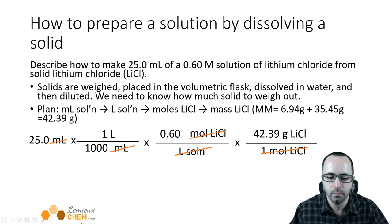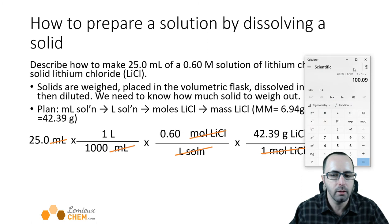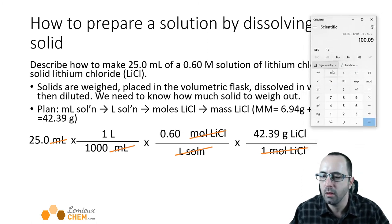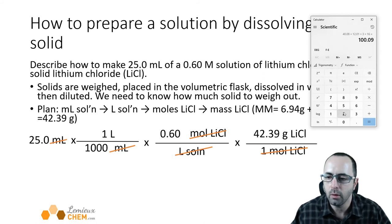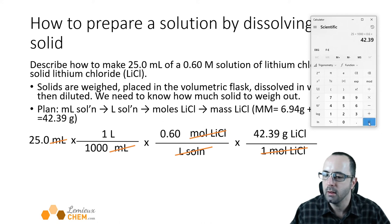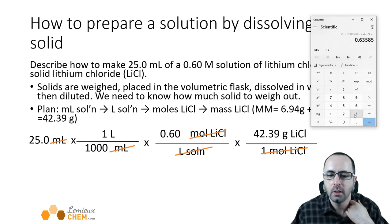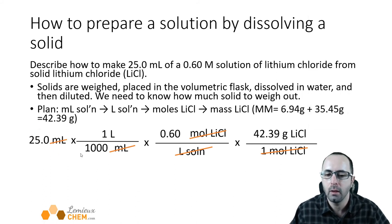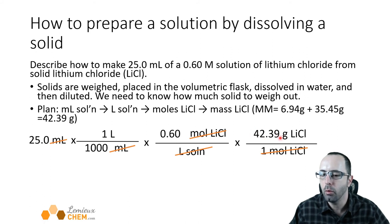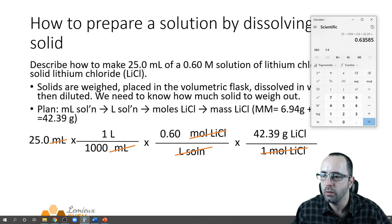Now we calculate: 25 divided by 1000 times 0.6 times 42.39 equals 0.63585. Looking at sig figs — we're multiplying and dividing, so we count sig figs. 25.0 has three sig figs, 0.60 has two sig figs, and 42.39 has four. So we round to two sig figs, giving us 0.64 grams of lithium chloride.